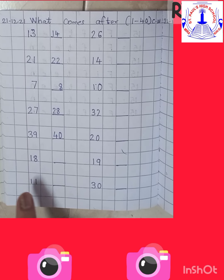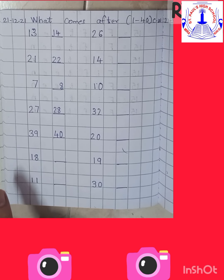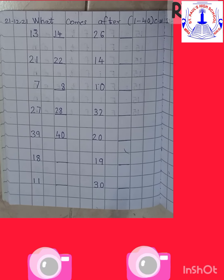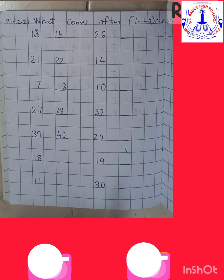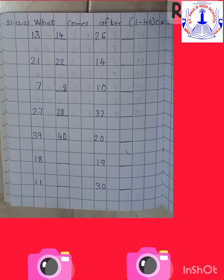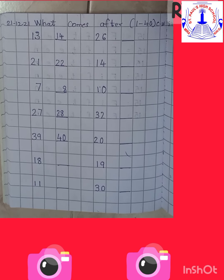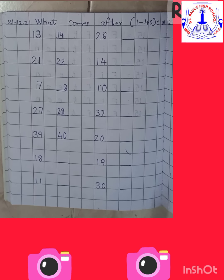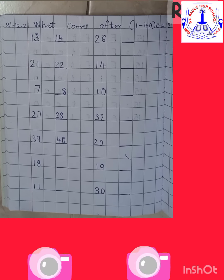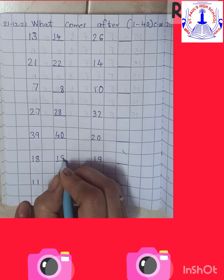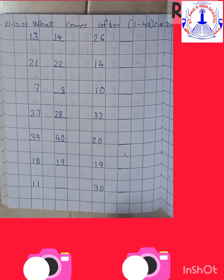Now what is the next number? 18. So let's start from number 11: 11, 12, 13, 14, 15, 16, 17, 18. And what comes after 18? Yes, you are right — 19. So come on children, write 19.